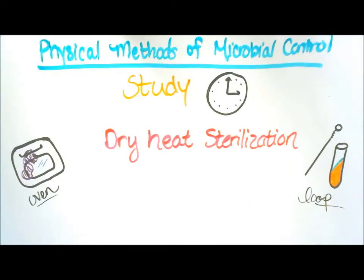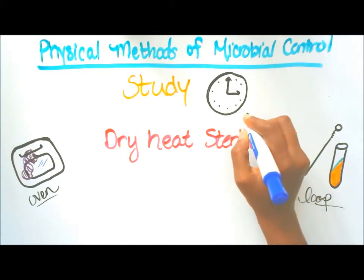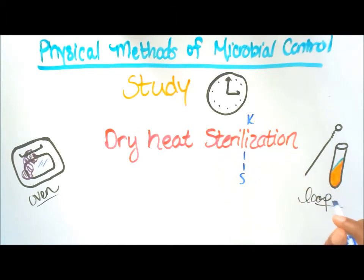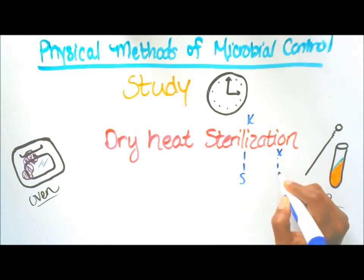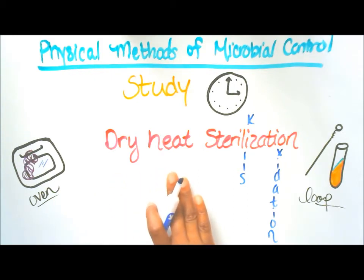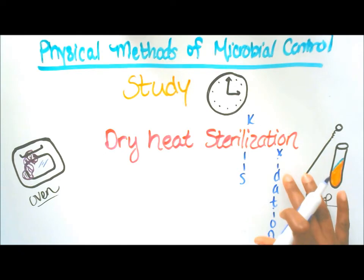It's study time for dry heat sterilization. Here's how to remember everything: first, you need to know that it kills by oxidation. We're going to use the letter 'i' for kills and the letter 'o' for oxidation — that's how you remember that dry heat kills microbes by oxidation.